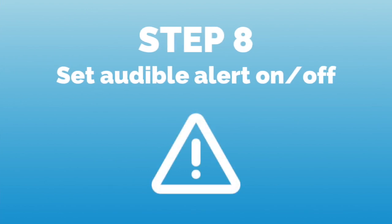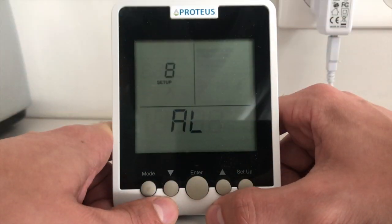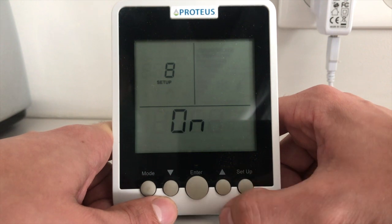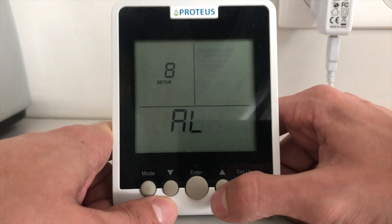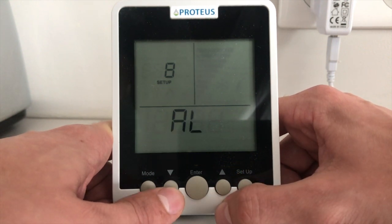Next, we can use the up and down arrows to select whether the low level audible alert is to be turned on or not. In this case, we are turning it off.